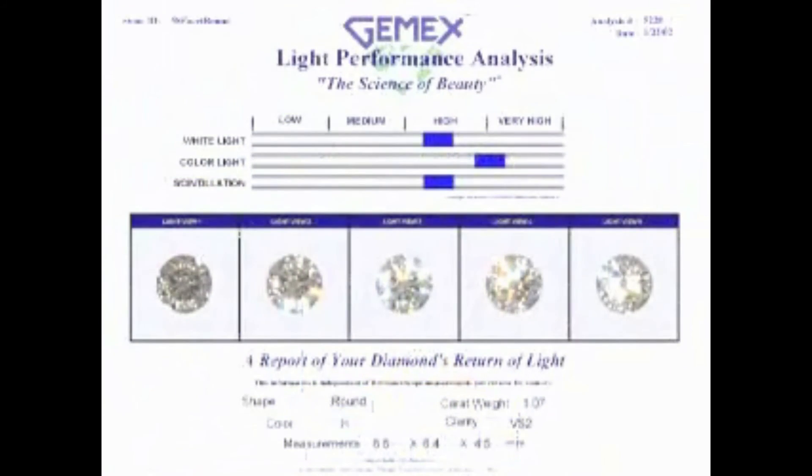The report shows the scales and the five images used for the evaluation. On the back, the ID and symmetry image is shown along with any additional operator entered information. It is now very simple for both you and your customer to know how the light performance of any diamond relates to all others in the world.